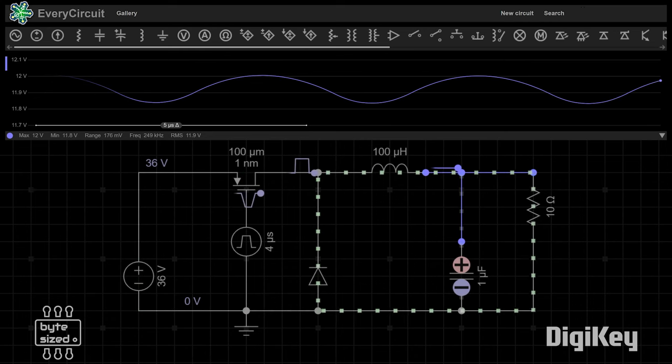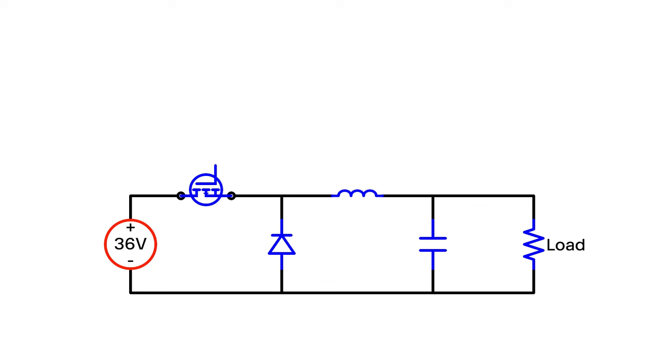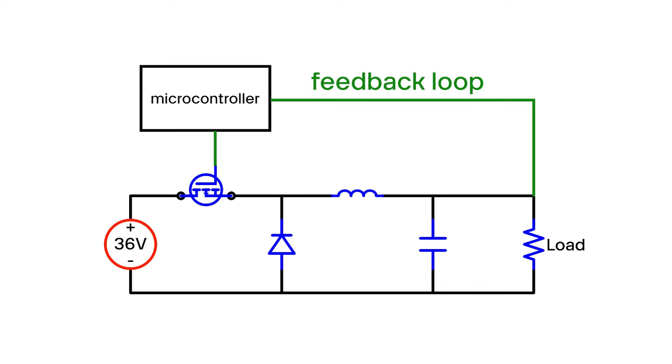To make this a closed loop system, whatever's controlling the duty cycle of that MOSFET needs to know what the output voltage is. Let's say I'm using a microcontroller. I can use that feedback loop to determine what the duty cycle needs to be set in order to get a specific output voltage.